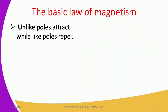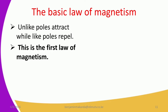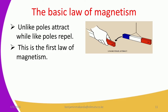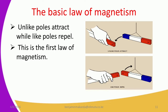The basic law of magnetism states: unlike poles attract while like poles repel. This is the first law of magnetism. When you bring together the north pole and the south pole they attract — the arrow shows the south pole being attracted towards the north pole. In the second setup, with two north poles together, the arrows point away from each other, indicating repulsion. That confirms that like poles repel.